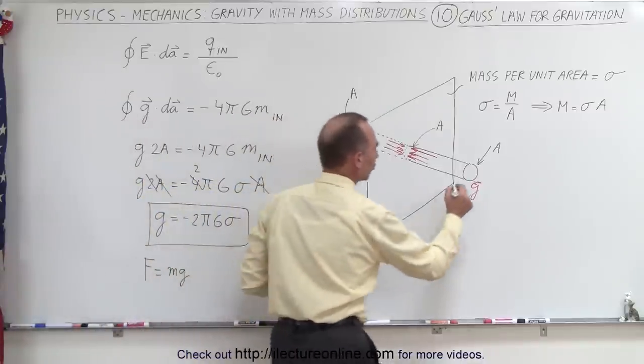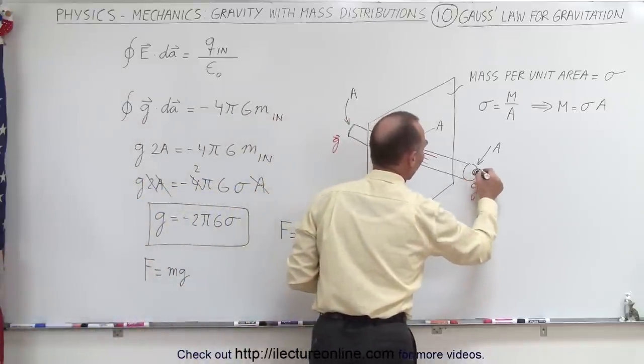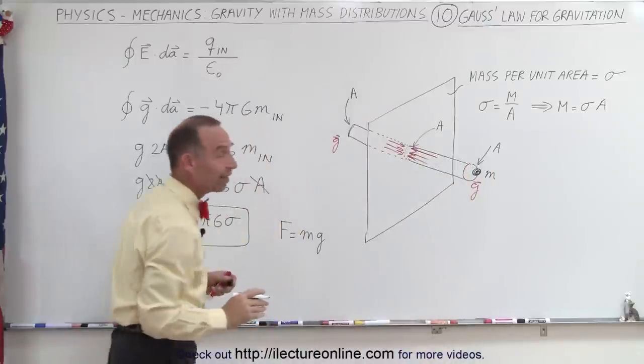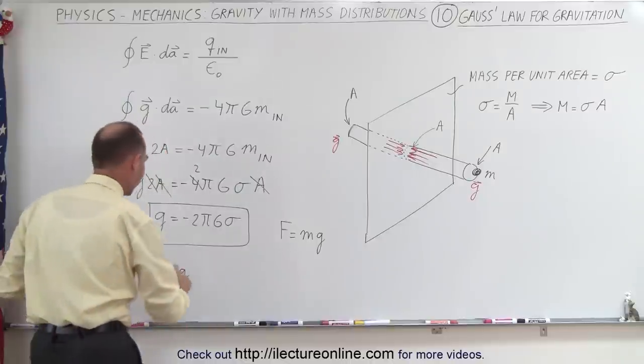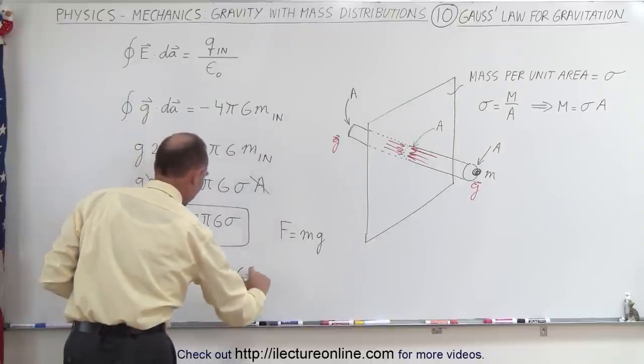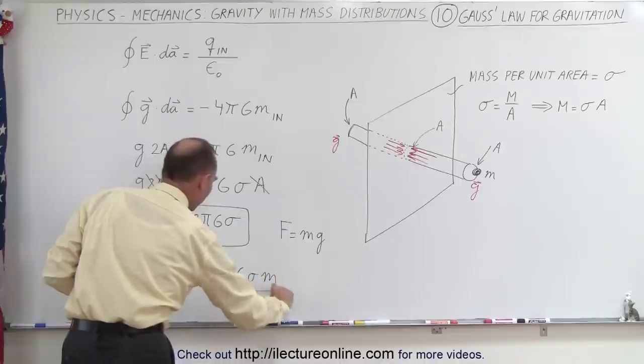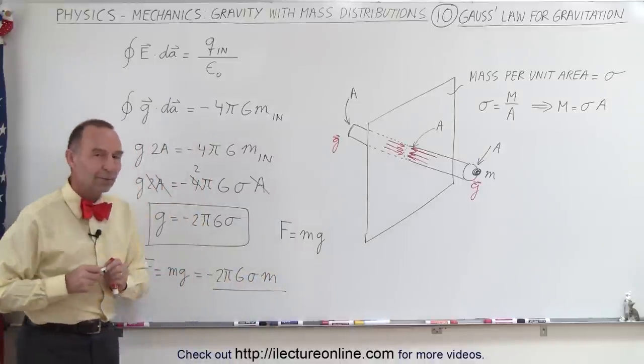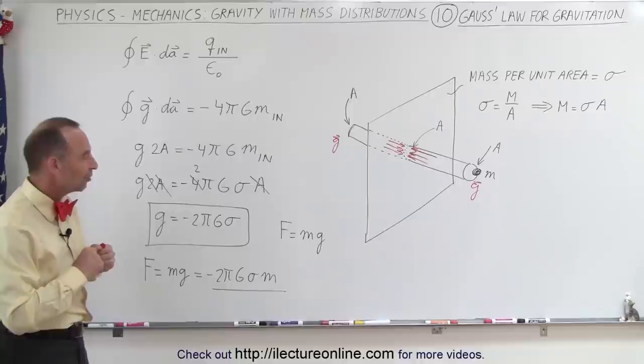In other words, if we place a small mass at a distance away from that infinite sheet, and it doesn't matter how big that distance is, this will be equal to minus 2πGσm, and that will be the force experienced by a small mass placed near an infinite sheet.